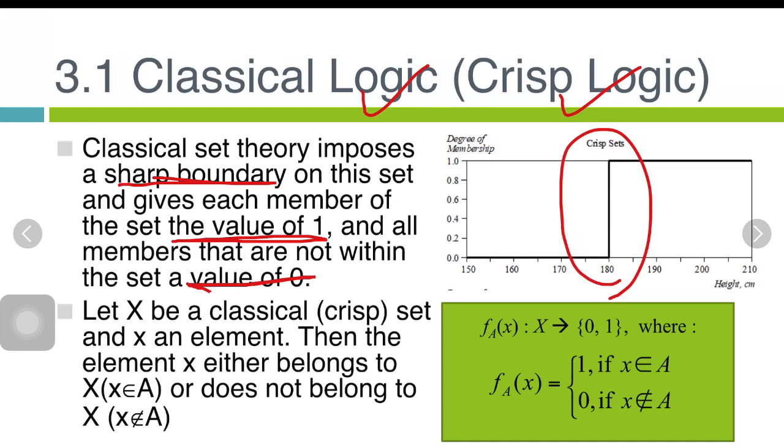Let's say we have a membership function fa here, where A is a set. X here is the universal set. fa is the function from X to {0,1}, where x, the small letter x, is the element in A.